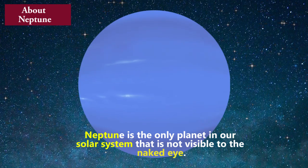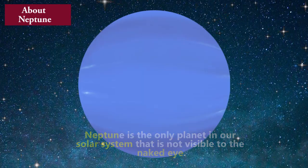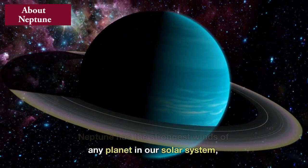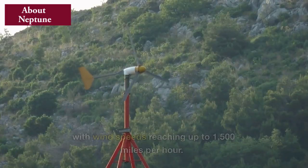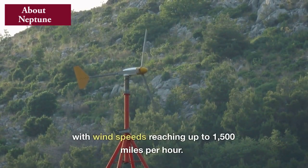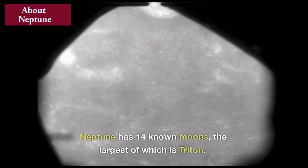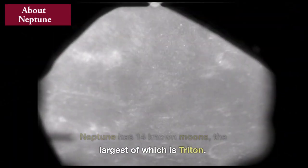Neptune is the only planet in our solar system that is not visible to the naked eye. Neptune has the strongest winds of any planet in our solar system, with wind speeds reaching up to 1,500 miles per hour. Neptune has 14 known moons, the largest of which is Triton.